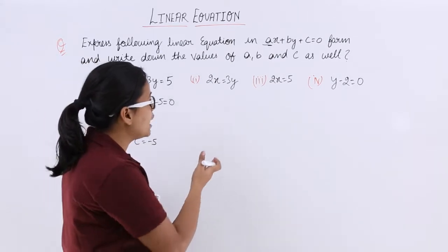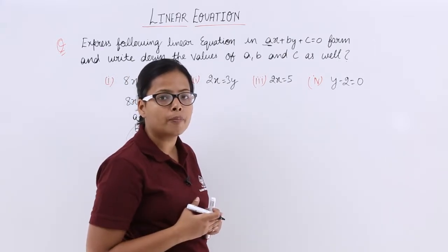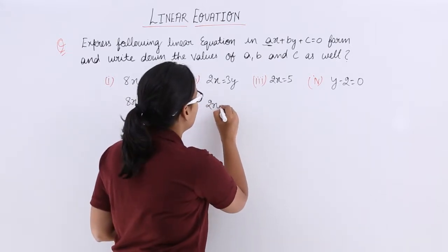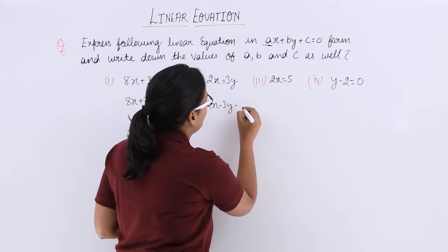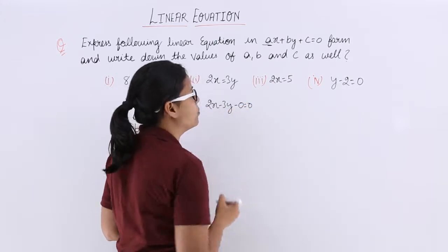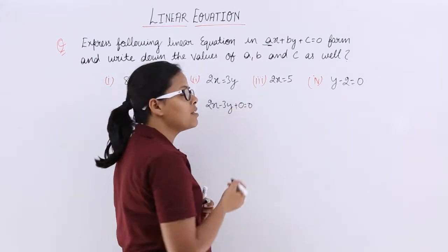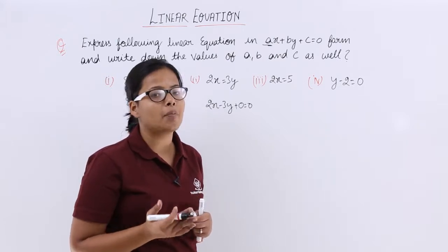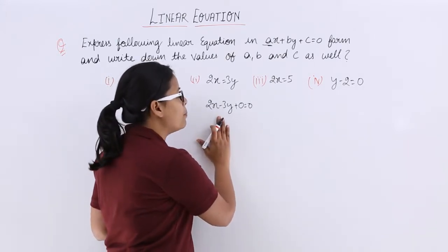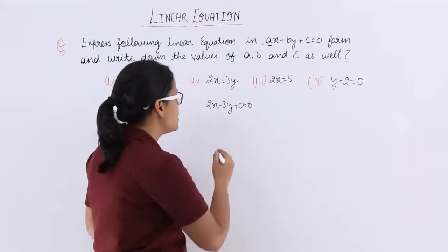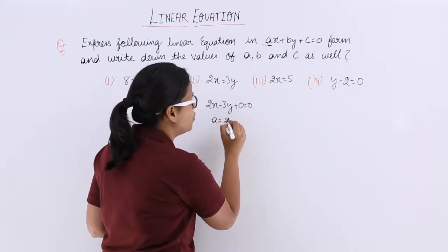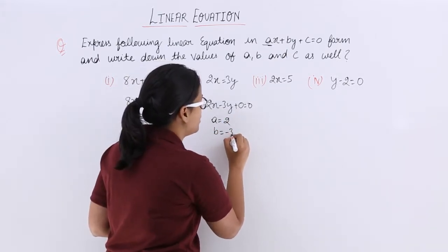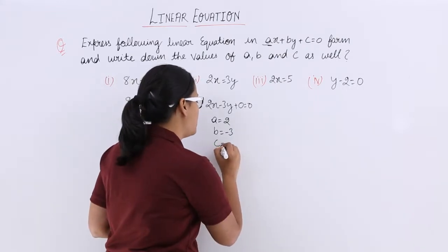Now let's take our second question, which is 2x equal to 3y. Again write this equation in the standard form. So you write it as 2x minus 3y plus 0 equal to 0 — the sign doesn't matter in case of 0. Comparing with ax plus by plus c equal to 0, the value for a is 2, value for b is minus 3, and value for c is 0.